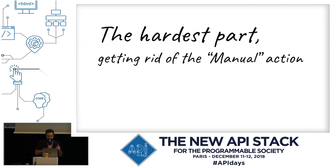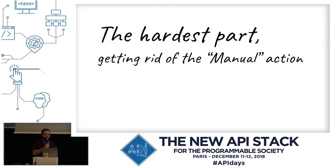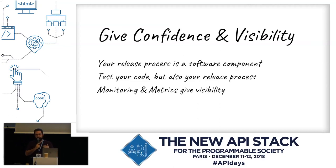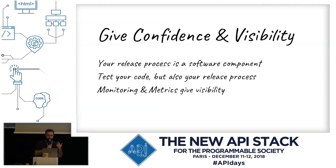The hardest part of going from CI to CD is getting rid of manual actions, because people will always want to do some checks — verify after deployment that everything is okay and nothing is broken. We are still in the process of migrating all our projects from continuous delivery to continuous deployment. How do we tell people it's okay to remove the manual action? We have to give confidence and visibility to the deployment process.